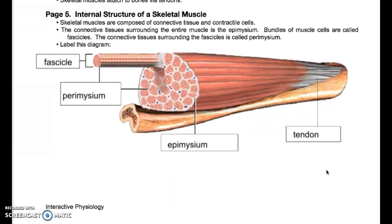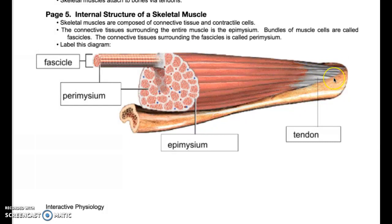Here we have the internal structure of a skeletal muscle. This is kind of what we're used to thinking of a muscle looking like — we have the muscle belly, and then we have the tendon, and that tendon connects the muscle to the bone. When you cut into muscle, you can see these different bundles, and each of these bundles is called a fascicle. The fascicles are actually made of parallel muscle fibers or parallel muscle cells — remember, muscle cells and muscle fibers mean the same thing.